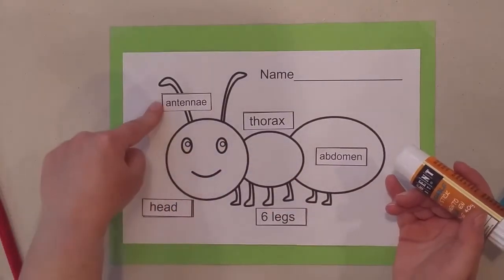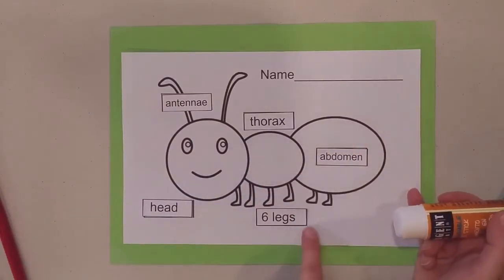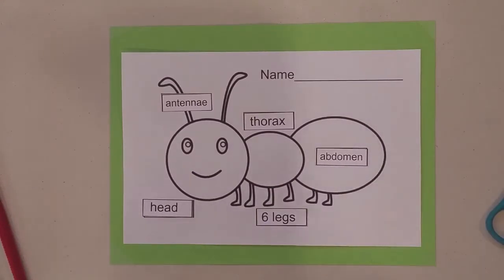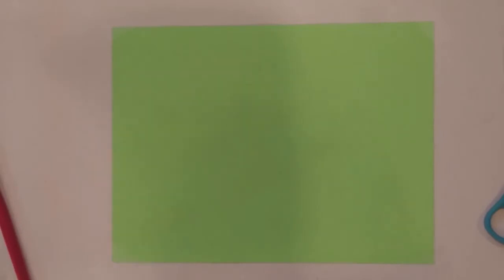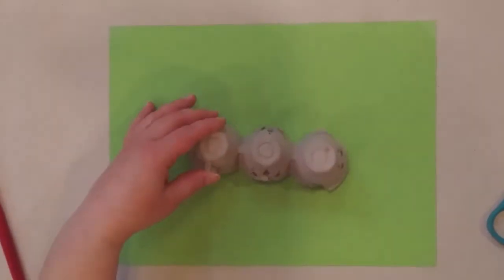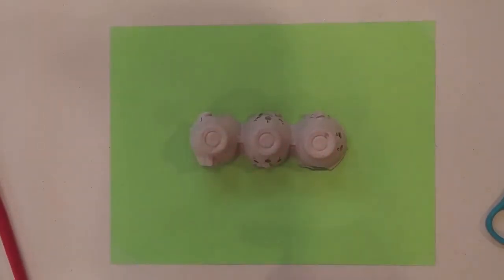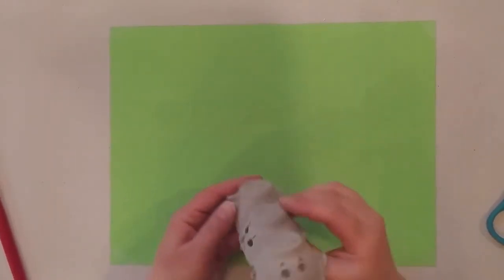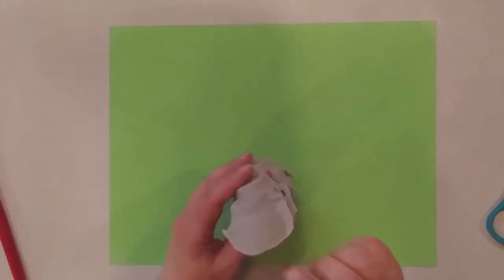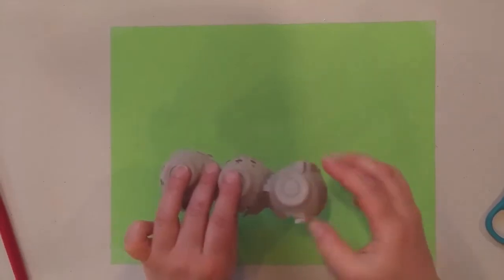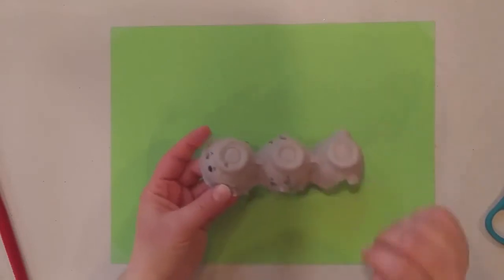We've got a head with antenna, a thorax, an abdomen, and six legs. Now we are going to make a model of an insect. Take your paper off and get out the pieces. You need the egg crate that has three cups. There's one side with holes labeled with A's — that's the head end — and the other side without holes is the abdomen end. The part in the middle is your thorax.